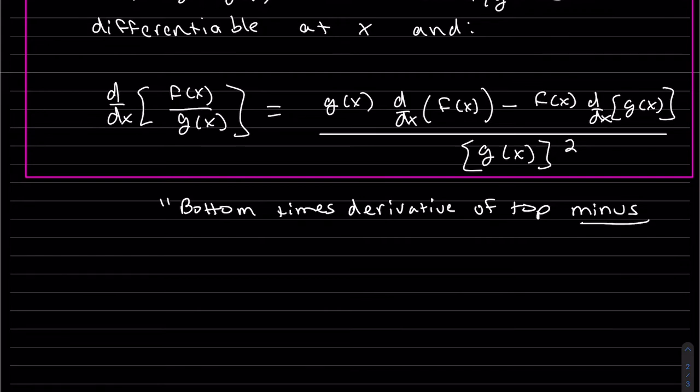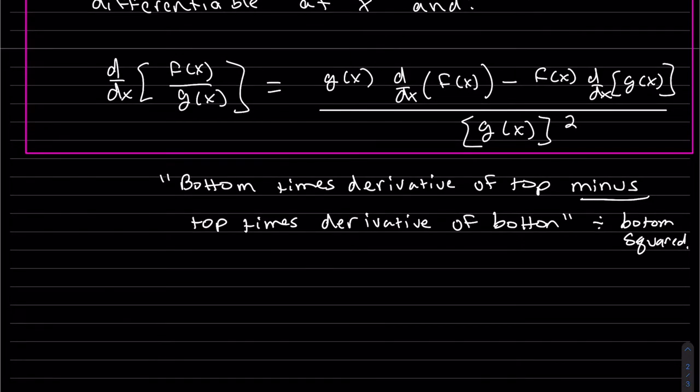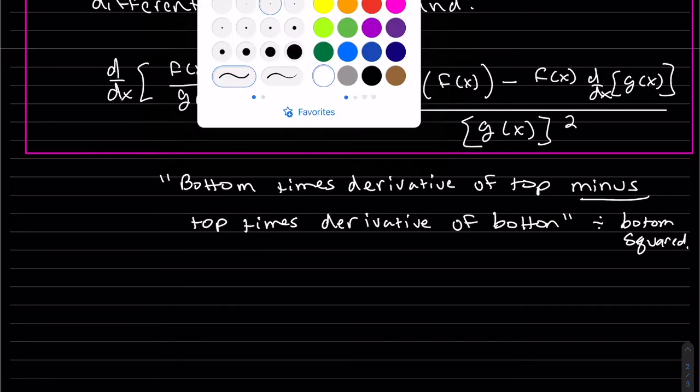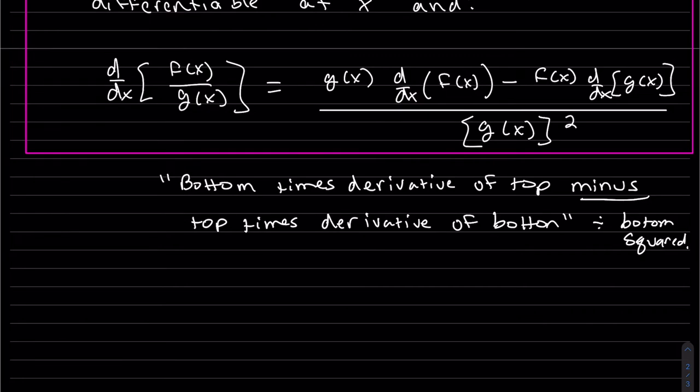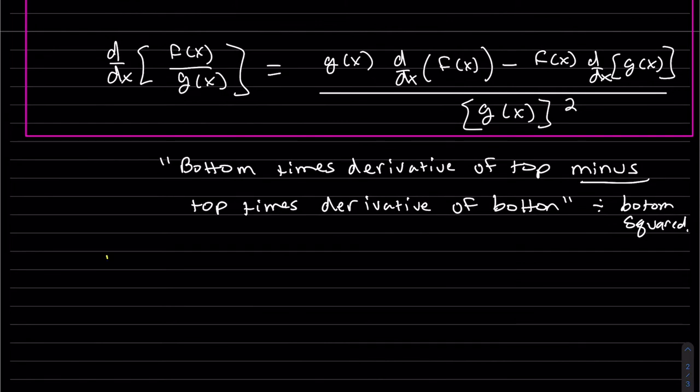It's bottom times the derivative of the top minus the top times the derivative of the bottom, and then divide it by bottom squared. Some students have taught me high d low minus low d high divided by low squared, something like that. Let's do an example.